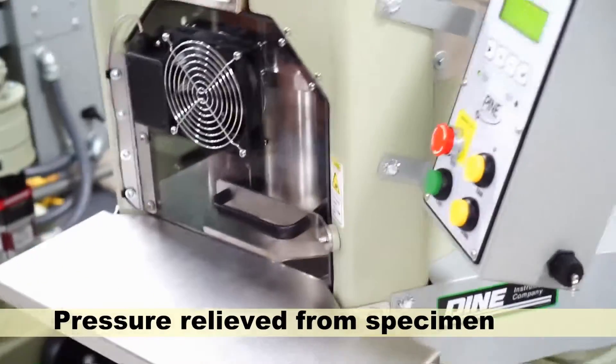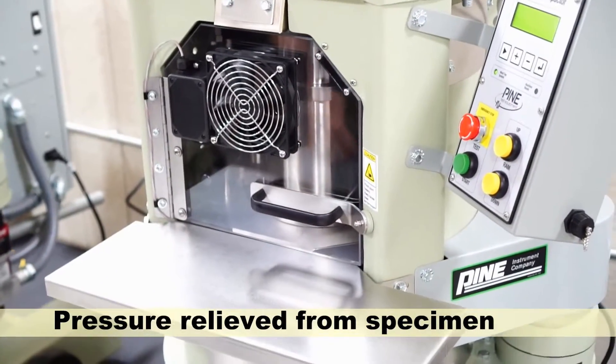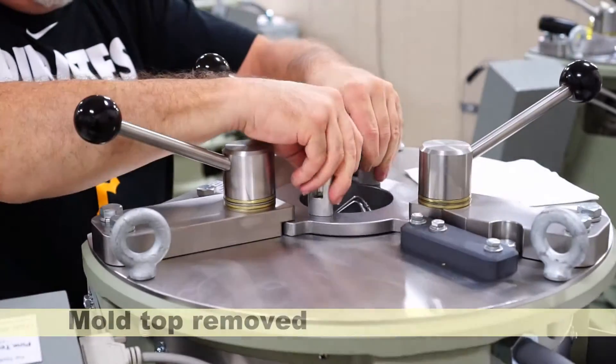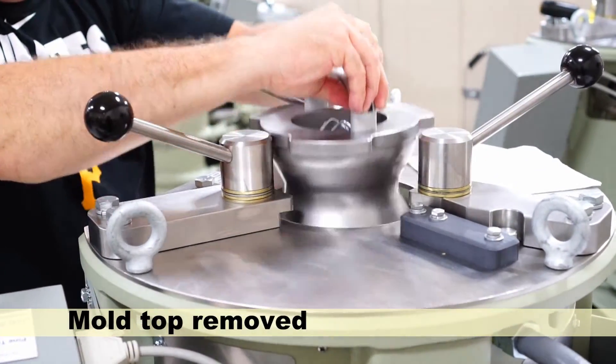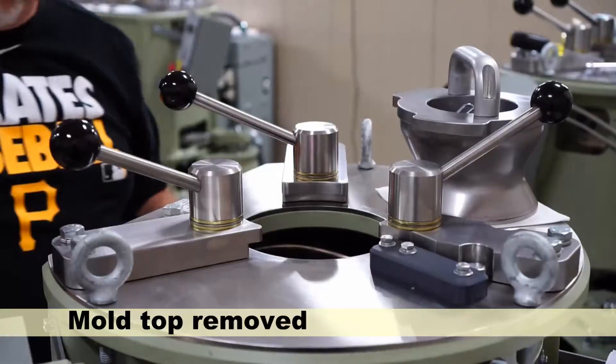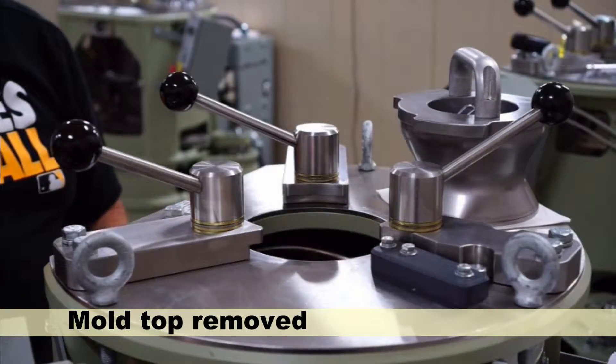When the desired number of gyrations has been completed, the compaction will stop and the machine will relieve the pressure from the specimen. The operator then removes the mold top to prepare for extrusion of the specimen.